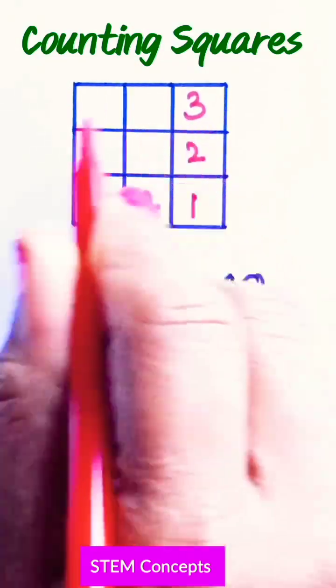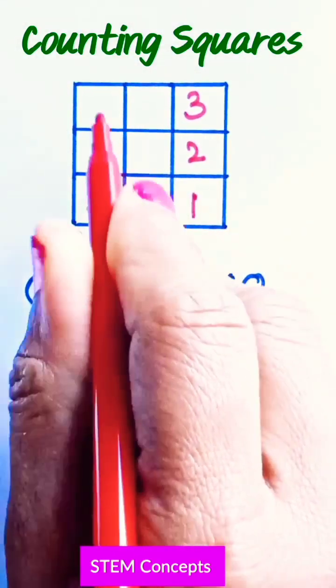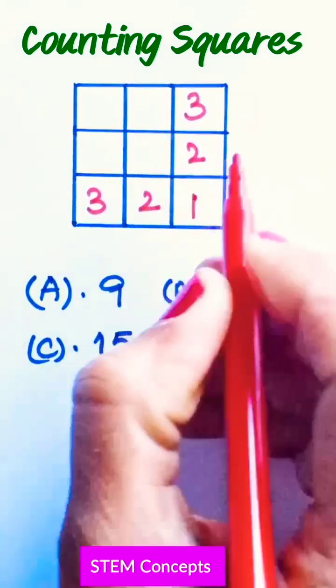So there are 3 rows and 3 columns. So it is a 3 by 3 square grid matrix.